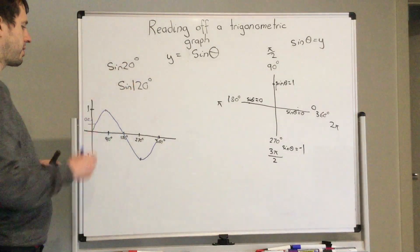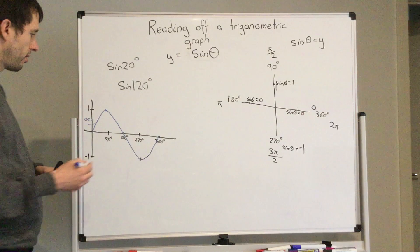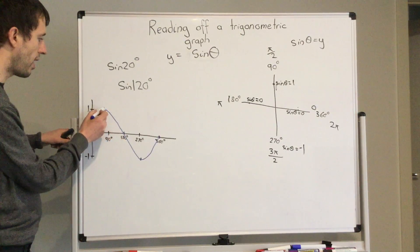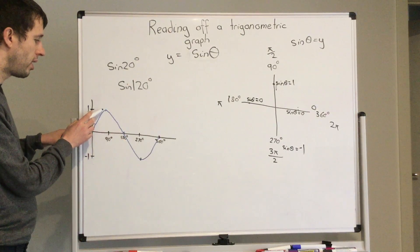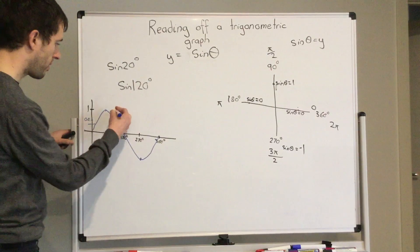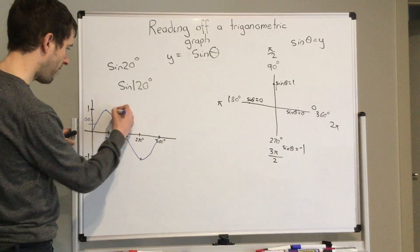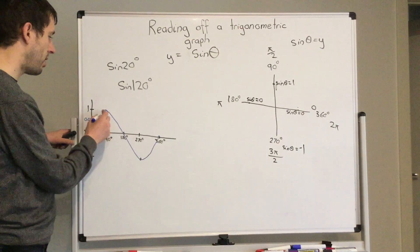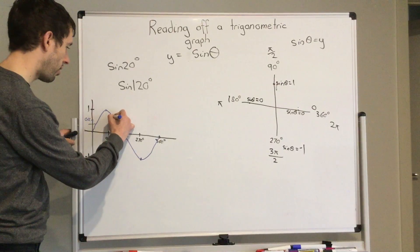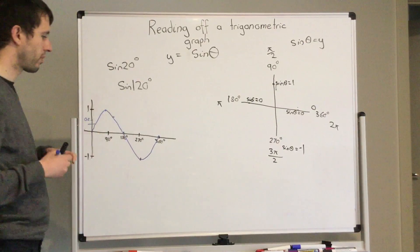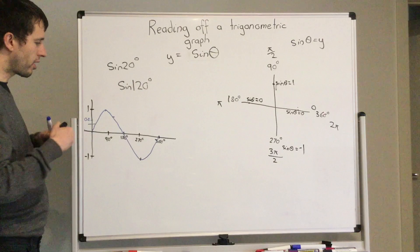But if I have sine 120 degrees, I know 90 is here. It's a bit higher than halfway between 90 and 180, so it's about here. So if I go across, it's higher.